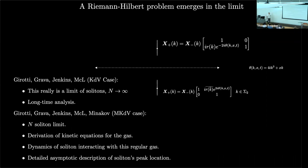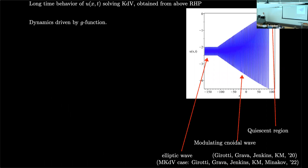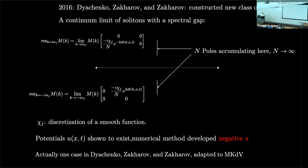It really is a limit of solitons as N goes to infinity. We carried out the long-time analysis and decided to take a tracer soliton — a very tall peak — on top of this limit of solitons and watch the interaction. The analytical result shows a modulating oscillatory wave train here, another modulating wave train in a different region, a fixed oscillatory wave extending to infinity, and zero on the right-hand side. That's a characteristic picture of the solution derived by Dyachenko, Zakharov, and Zakharov.